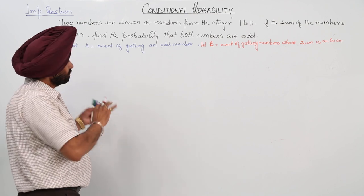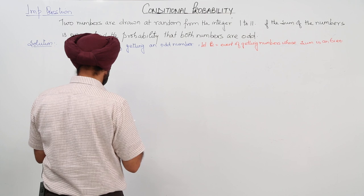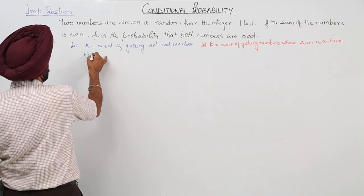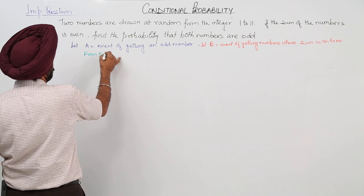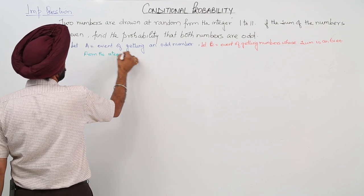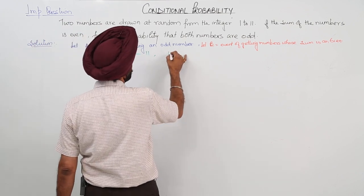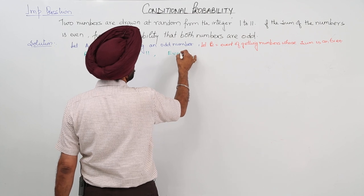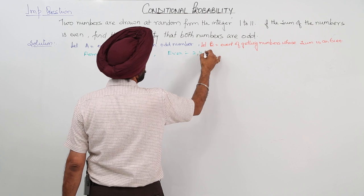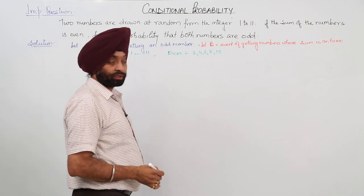From the integers 1 to 11, even numbers are 2, 4, 6, 8, and 10. These are the even numbers.